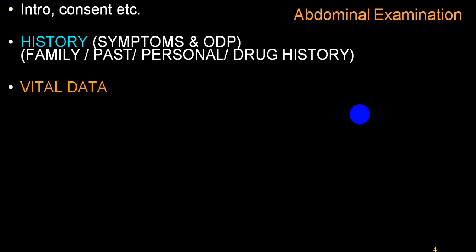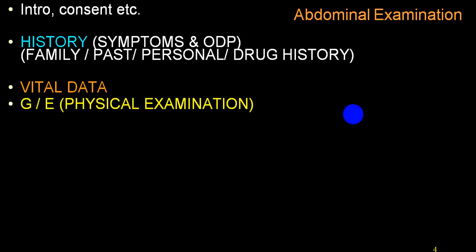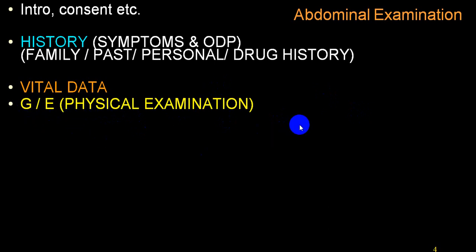Vital data also includes level of consciousness, skin examination, pupillary examination, urine input/output chart, and pulse oximetry. Then we go to general examination, which is a part of physical examination. I've already uploaded the video on general examination — please go through that. Then we start with a specific system, that is abdominal examination, where we do inspection first.